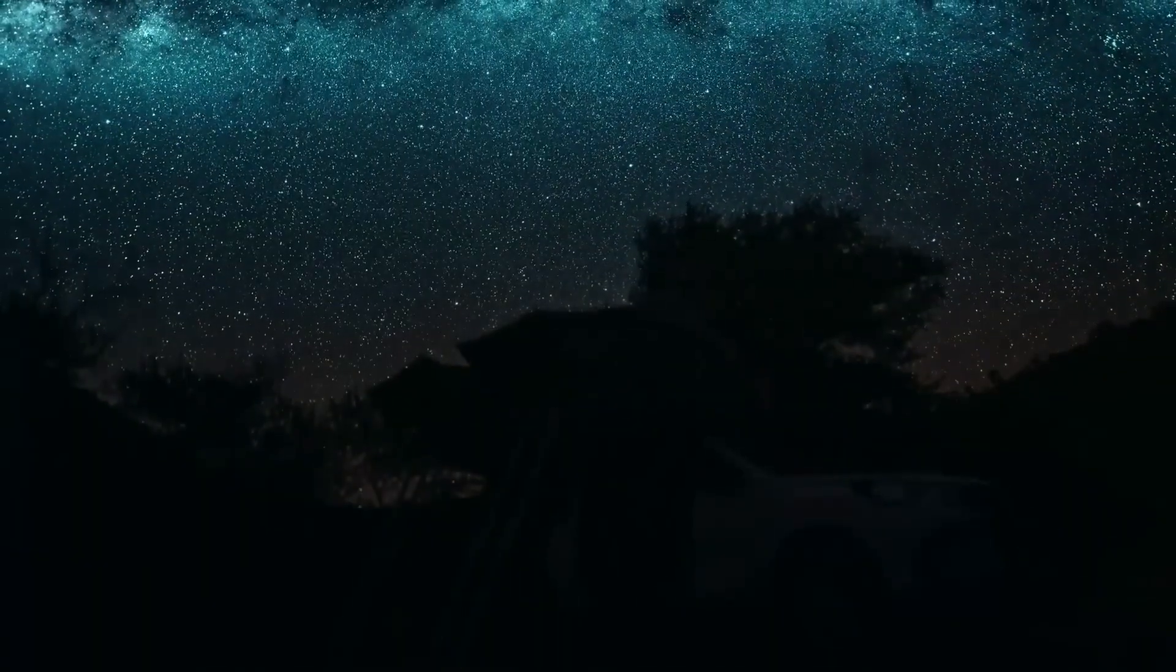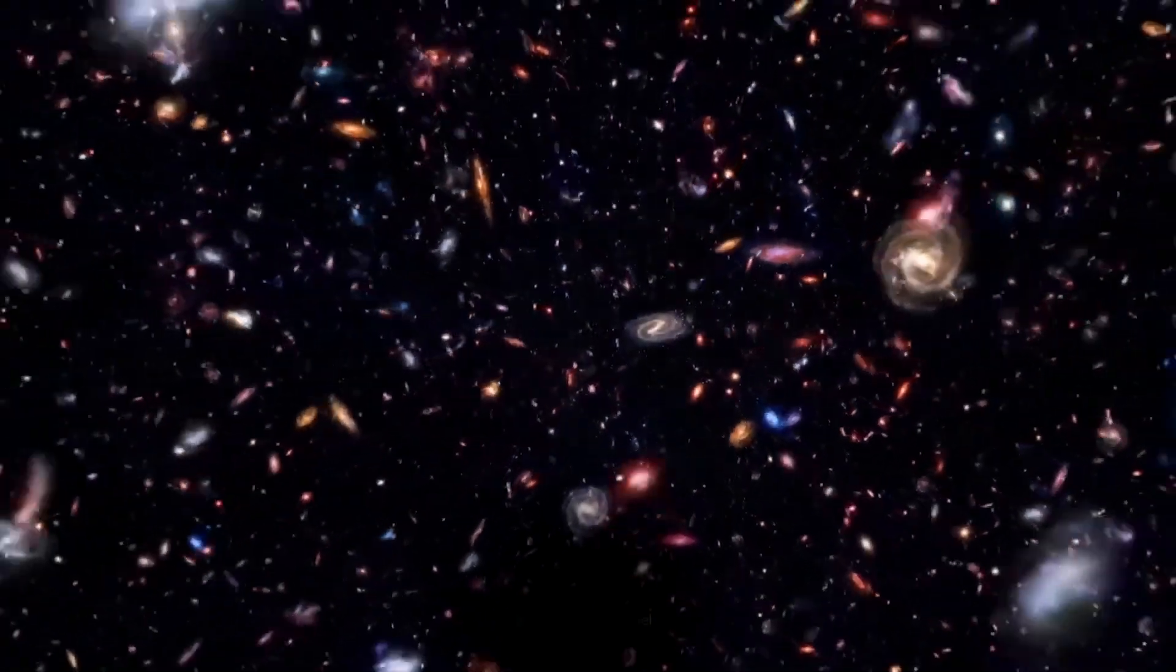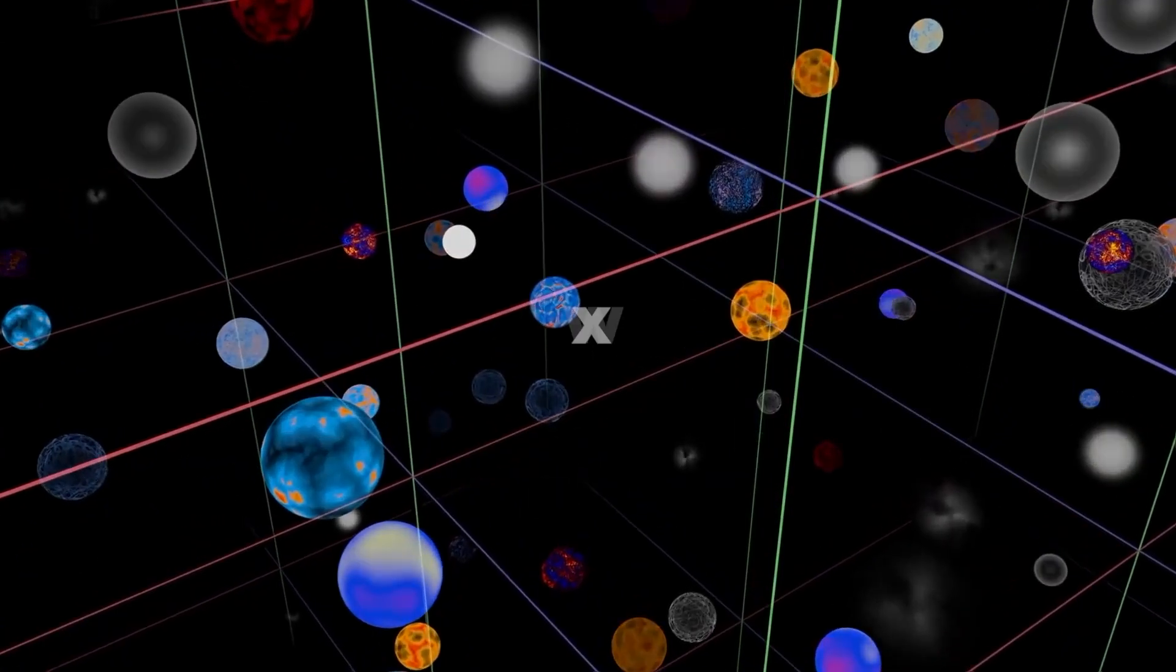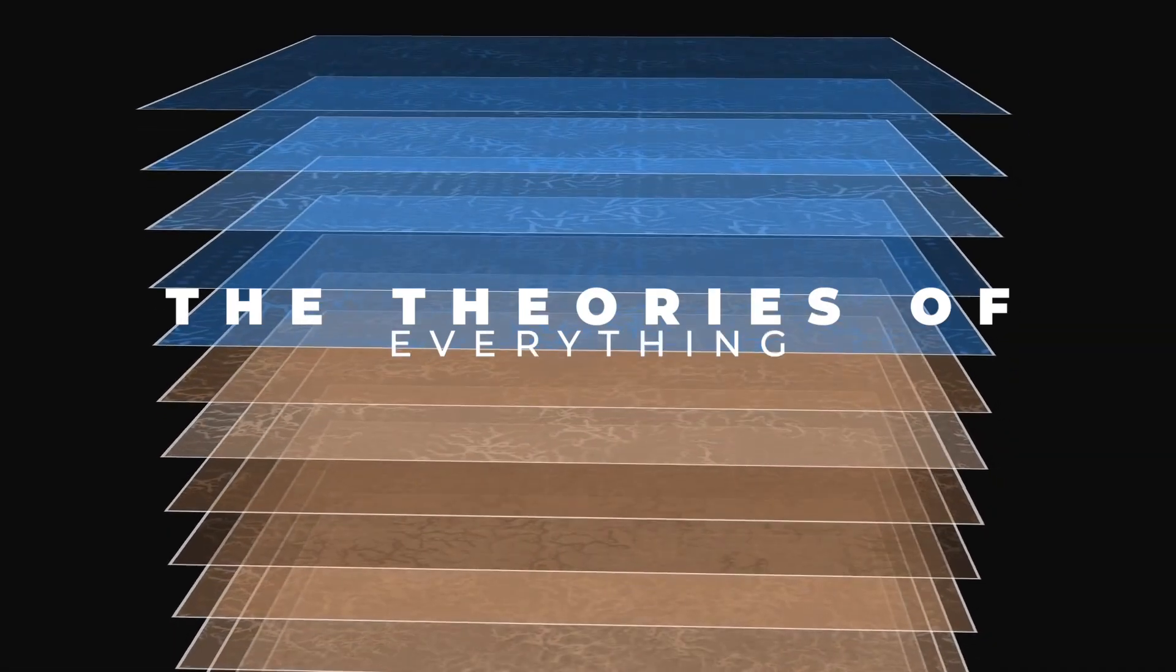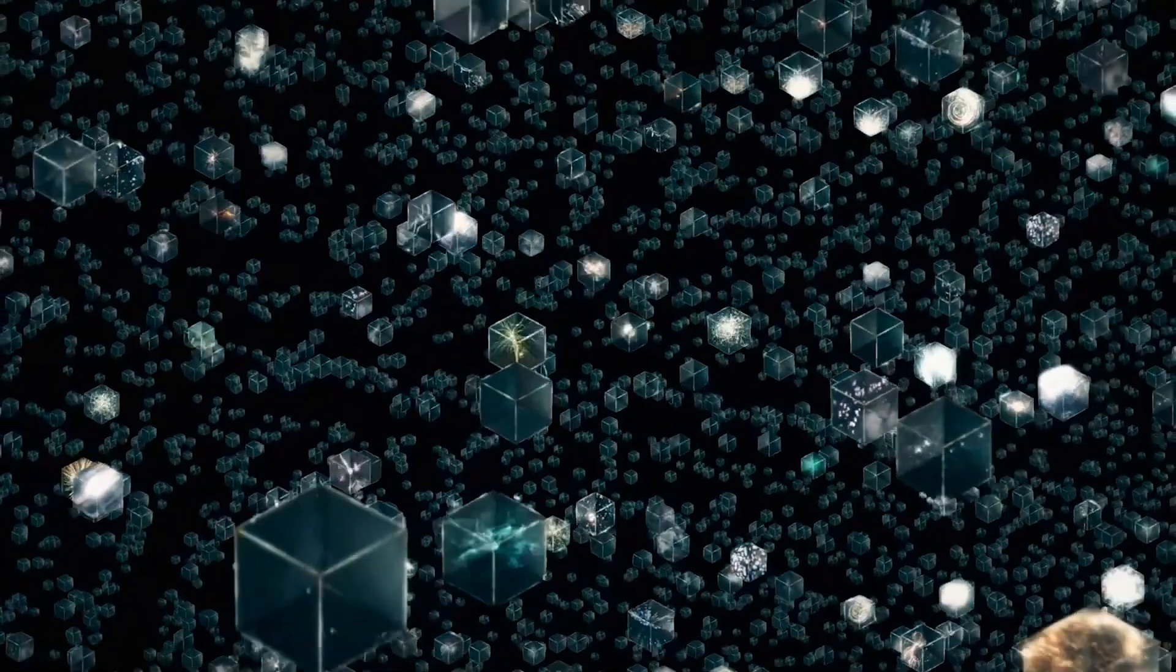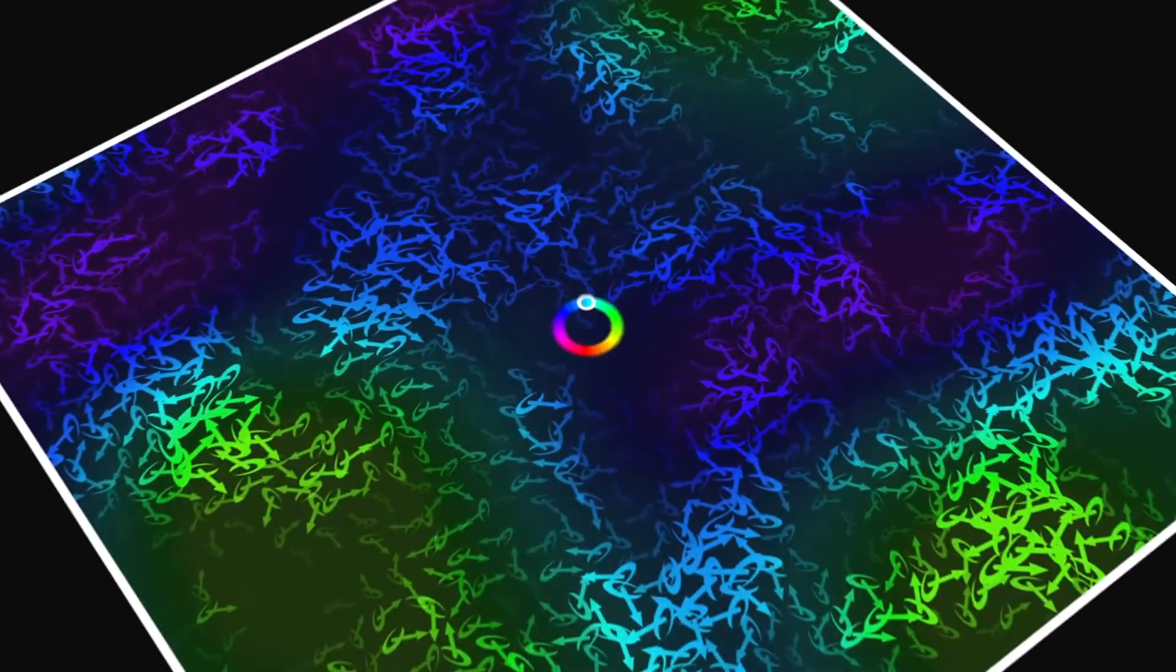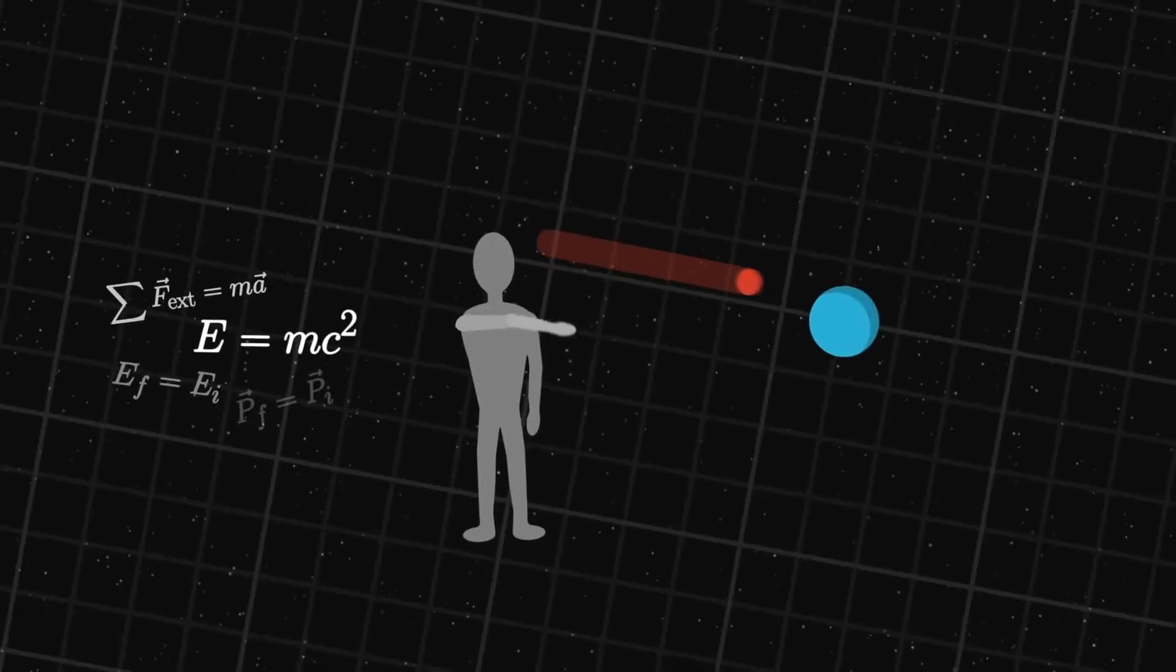One of the goals of CERN is to understand how the universe is put together and how it functions on a fundamental level. Some of the leading theories that attempt to explain the whole of the universe, the theories of everything, include higher dimensions above the three dimensions that we experience every day. These higher dimensions are required for certain fundamental interactions to occur between the building blocks that these theories claim make up our reality.